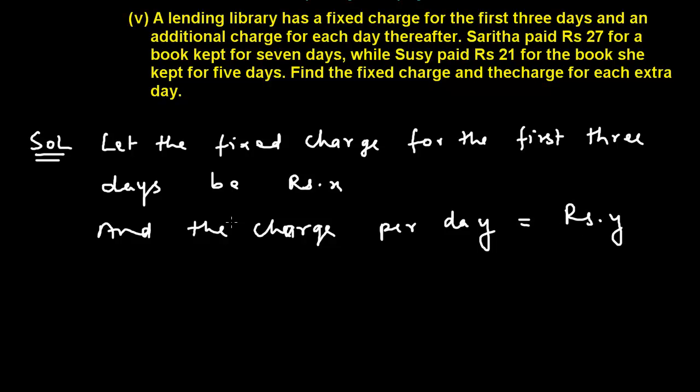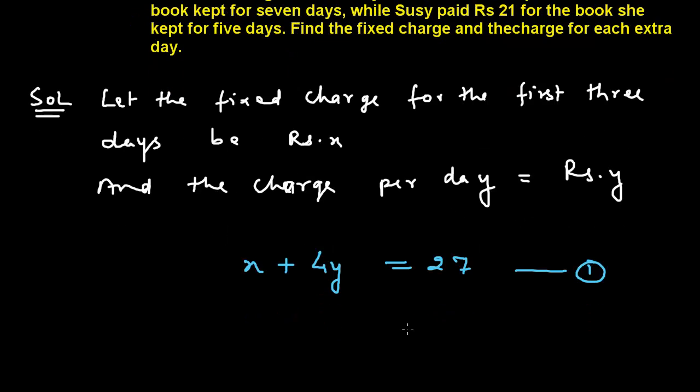We have two situations. When Sarita paid rupees 27 for a book kept for seven days, we know that there is a fixed charge for first three days, then remaining days are four. This means X plus 4Y equals 27. This is our equation number one. Susie paid rupees 21 for five days.